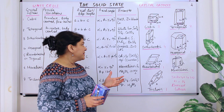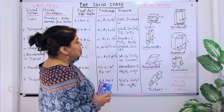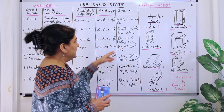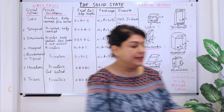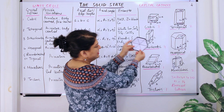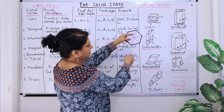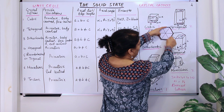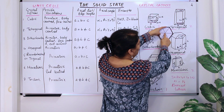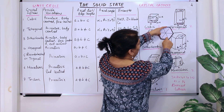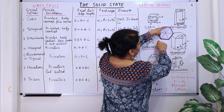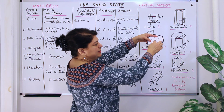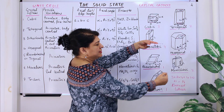Examples of orthorhombic crystals are rhombic sulfur, potassium nitrate, and barium sulfate. The orthorhombic system has four types of crystal arrangements possible. The next one is hexagonal. In a hexagonal arrangement, the actual unit cell is not the entire hexagon — you take a section of it, and the angle at that section would be 120 degrees.